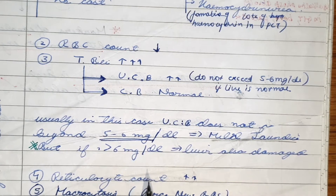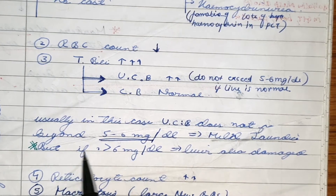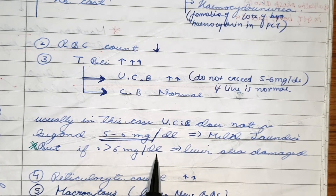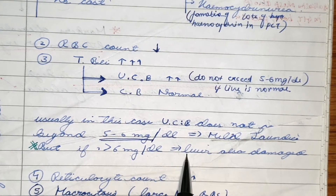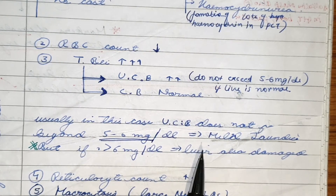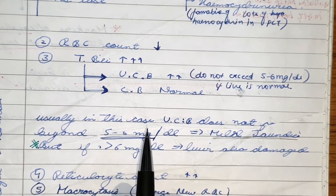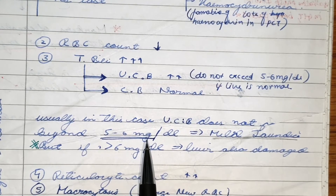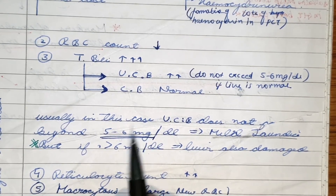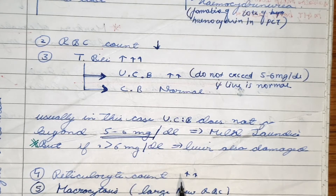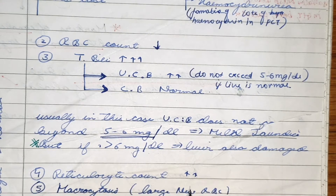An important clinical point to remember: if there is more than six milligrams per deciliter of bilirubin in blood, then there must also be liver damage. If less than six milligrams per deciliter, it is because of excessive hemolysis. More than six milligrams per deciliter indicates liver damage.